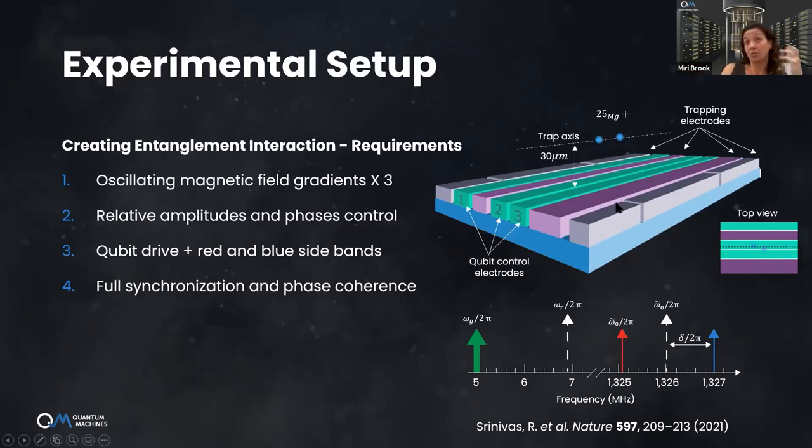What do I need control-wise to use these fields to create the entanglement? First of all, I need an oscillating magnetic field at this frequency - five megahertz. I want to control the relative amplitude and phases of all these fields compared to each other. If I want to create a gradient, the amplitude of the field on electrode one needs to be different than electrode two, different than electrode three. In addition, I want to have the qubit drive, which is near the qubit transition frequency.